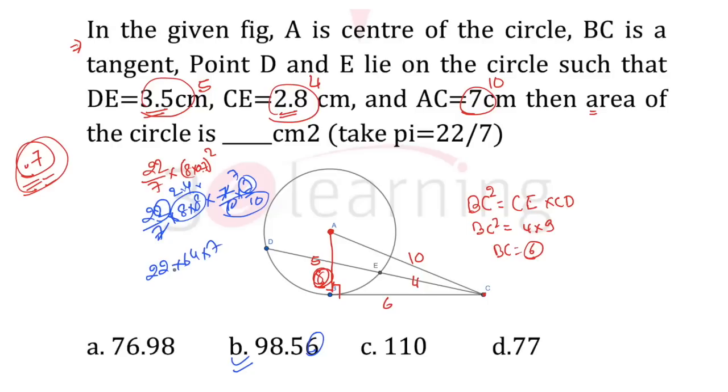6 would be the answer, or you can do some calculation: 22 into 64 into 7 divided by 100. You will get 98.56. This question has two concepts. One is whenever you have a tangent and a secant, you work on BC square equals CE into CD. And when you have some twisted data, because question setters like me give twisted data.